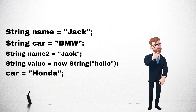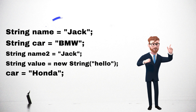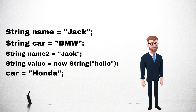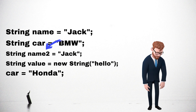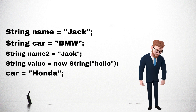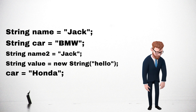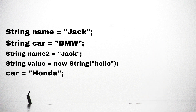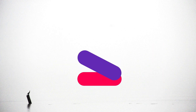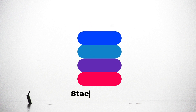Jack is still confused about how variables know the memory address of values. Well, apart from heap memory, there is another memory known as stack memory, which holds your variable name and the value address of heap memory. We will discuss stack memory in another video, as that is a different topic.